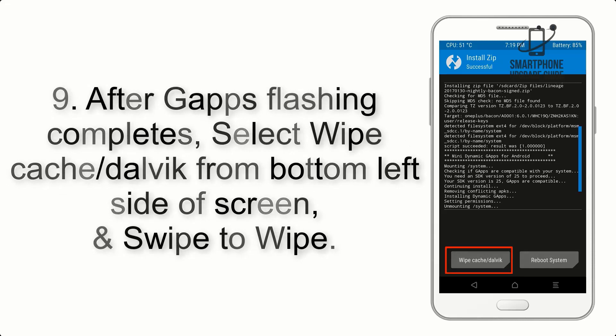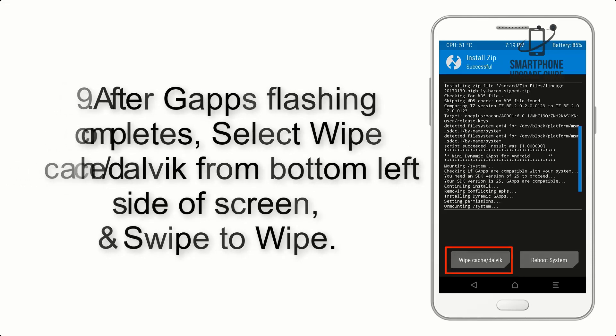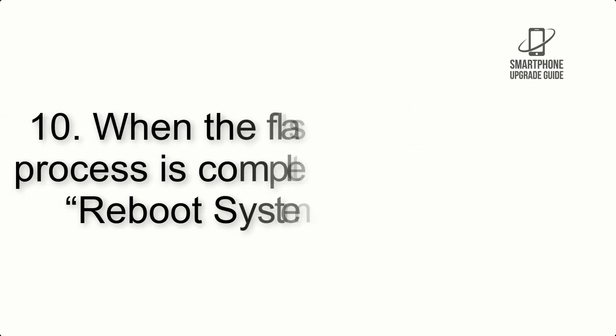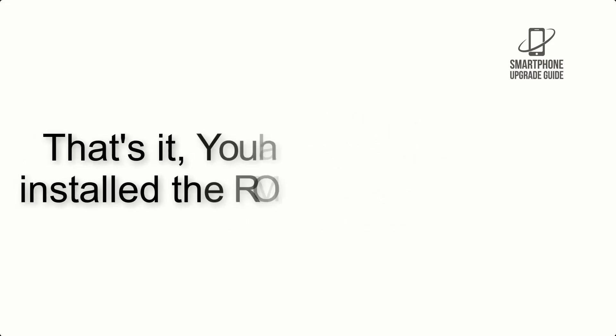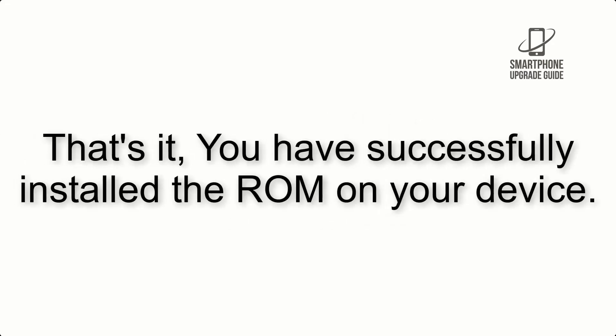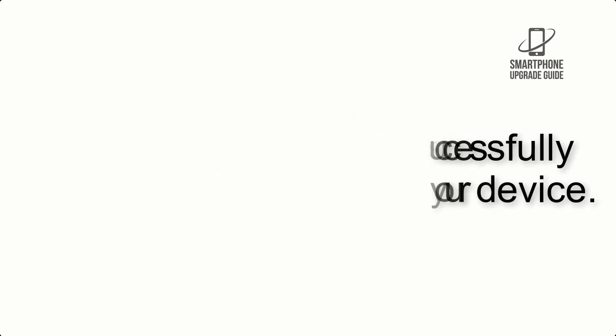Step 8: Flash the GApps zip package in the same manner. Step 9: After GApps flashing completes, select Wipe Cache and Dalvik from the bottom left side of the screen and swipe to wipe. Step 10: When the flashing process is complete, hit Reboot System. That's it — you have successfully installed the ROM on your device.